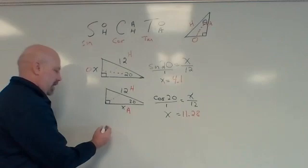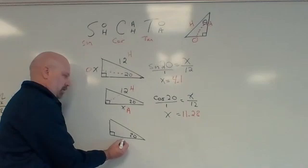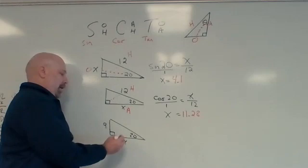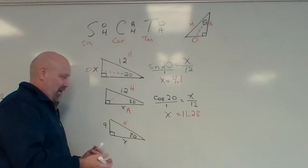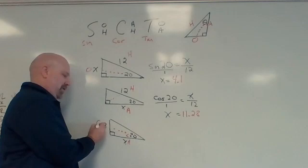One more we can look at. I put a nine there and X there. And that's still angle 20. Now, this is still the hypotenuse. But there's no letter or number there. So I'm not using the H. This is the adjacent. It's right next to the angle. All the way opposite of that angle is the opposite. So I'm using O and A. So I'm using TOA. So I put tangent.